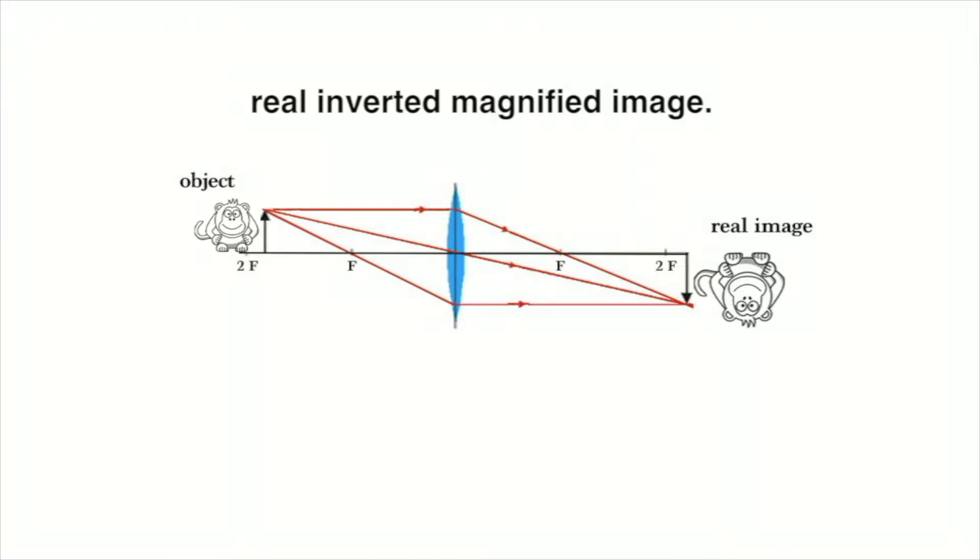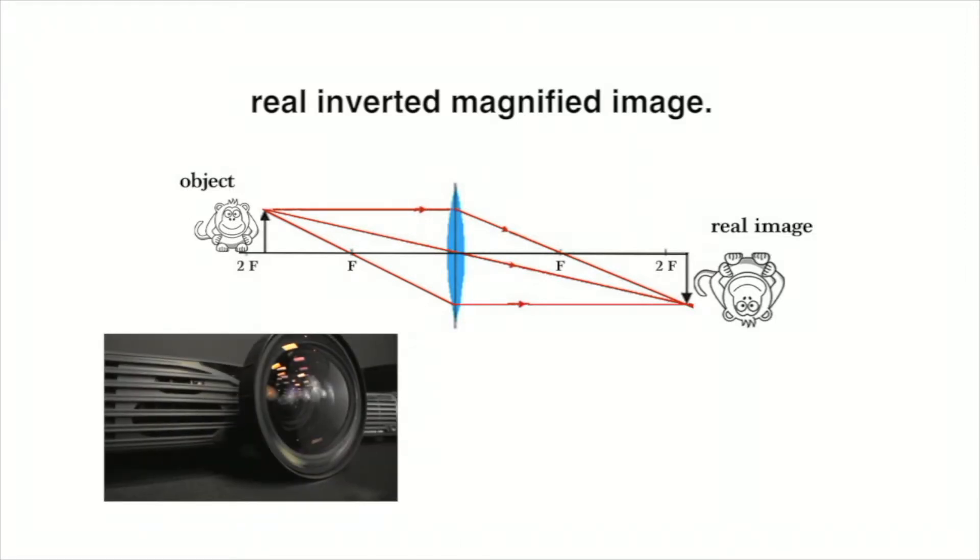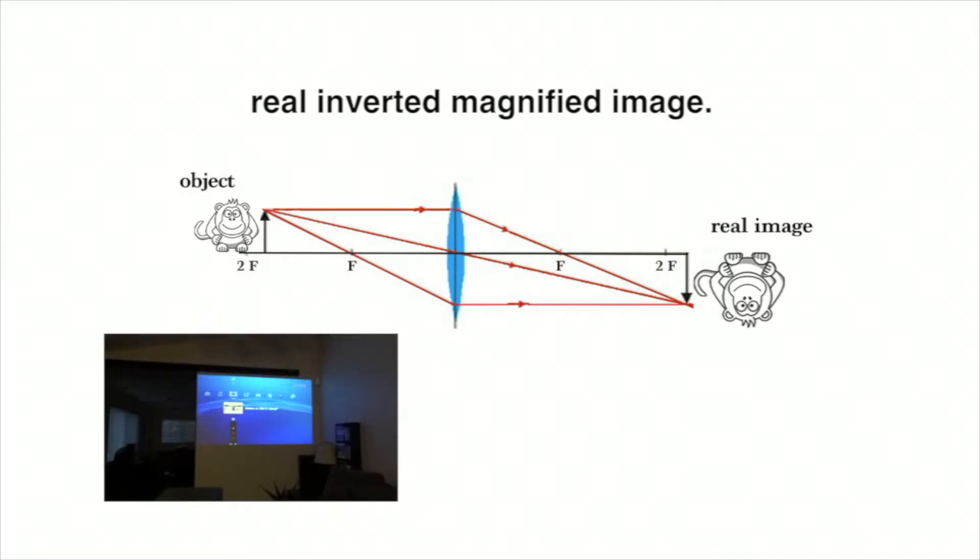When a convex lens forms a real image, the image can be shown on a screen. The image will be in focus when the screen is at the focal point of the lens. This is the principle behind projectors.